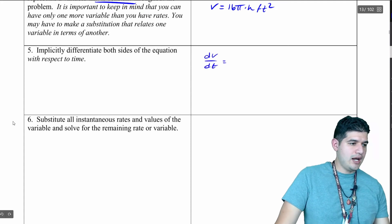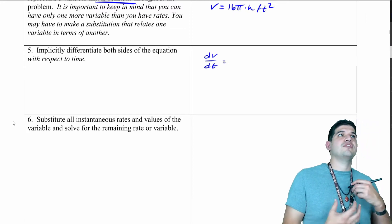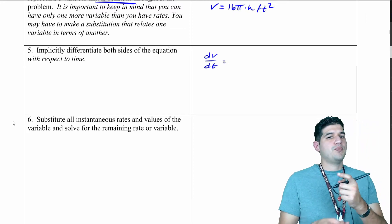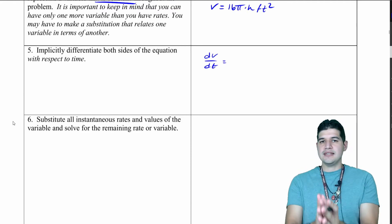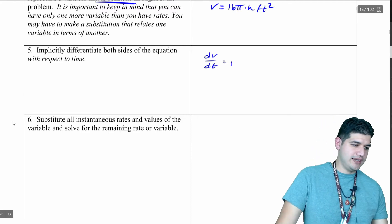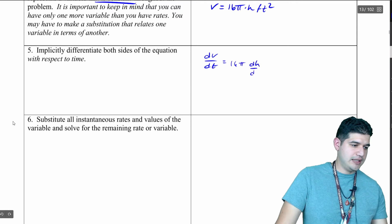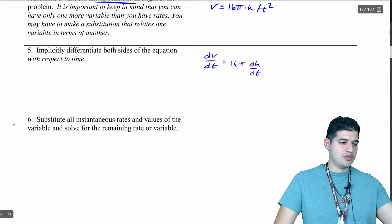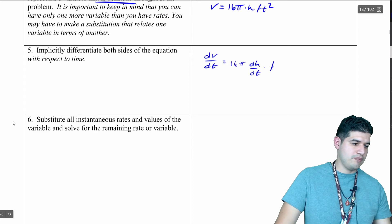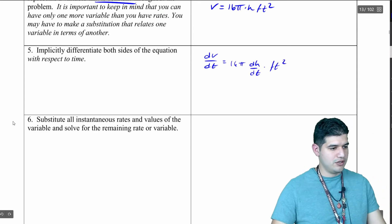That's going to be dV/dt equals 16π h. What's the derivative of h? Well that's just one, but with respect to time, dh/dt. So I'm going to get 16π dh/dt, and we're going to get feet squared still.